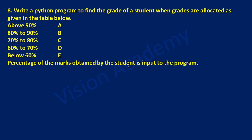The percentage of marks obtained by the student is input to the program. Here let us take percentage variable as P. Usually the percentage is in terms of a real number, so we are going to use float type. Inside the round bracket we will write the input function and ask the user to enter the percentage.